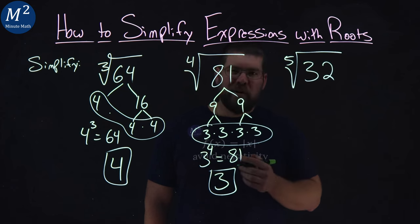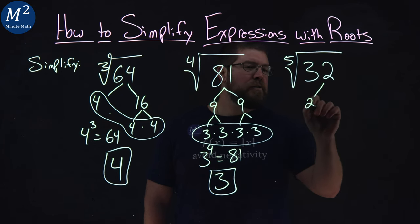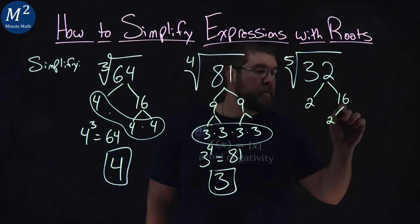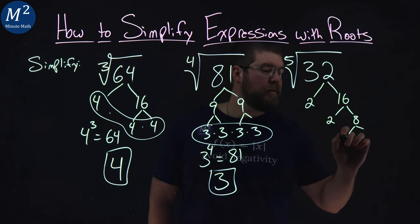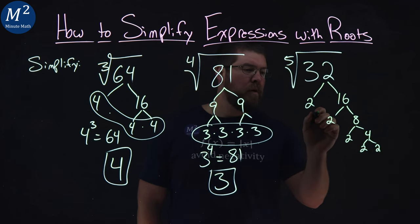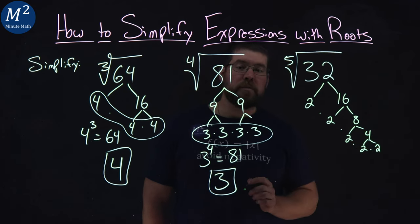You might have this memorized, but let's go through it. 32 is a 2 times a 16. 16 is 2 times an 8. 8 is a 2 times a 4. And 4 is a 2 times a 2.